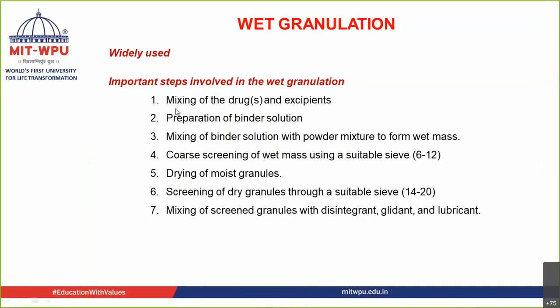The steps involved in wet granulation were: we took the drug and excipients — the disintegrant, binder, and diluent — and mixed them together. Then we prepared a binder solution and added it to the powder mix to form a wet mass. This wet mass was screened through a suitable sieve to collect moist granules, which were then dried. After drying, they were passed through another sieve to get the final granules. To these granules, we further added disintegrant, glidant, and lubricant, and then went for compression.